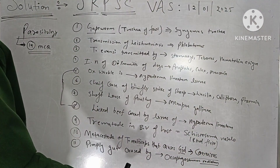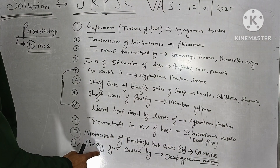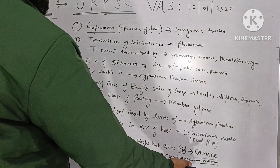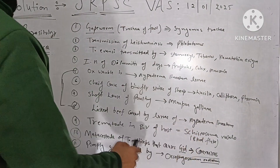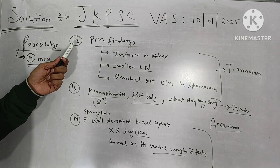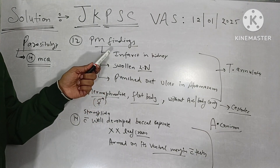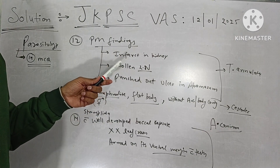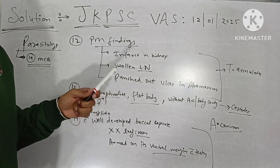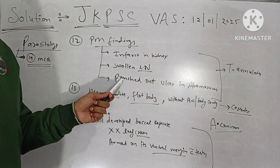One MCQ was on pimply gut — it is simply caused by Oesophagostomum radiatum. Question number 12 had some post-mortem findings given and you had to choose which parasite these findings belong to. The most striking finding is the punched-out ulcer in the abomasum.